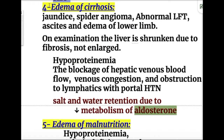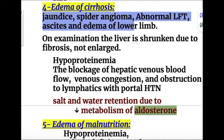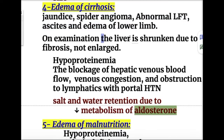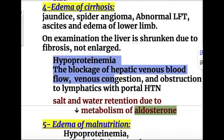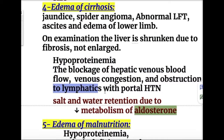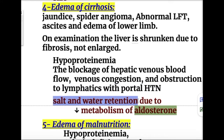Condition number four is cirrhosis, presenting with jaundice, spider angiomas, abnormal LFTs, ascites, and edema of the lower limbs initially. On examination, the liver is shrunken due to fibrosis. There is hypoproteinemia because the liver fails to produce albumin. Blockade of hepatic venous blood flow leads to venous congestion and lymphatic obstruction with portal hypertension, and salt and water retention occurs.